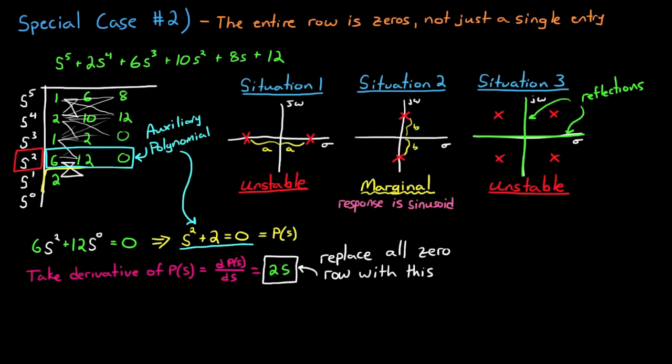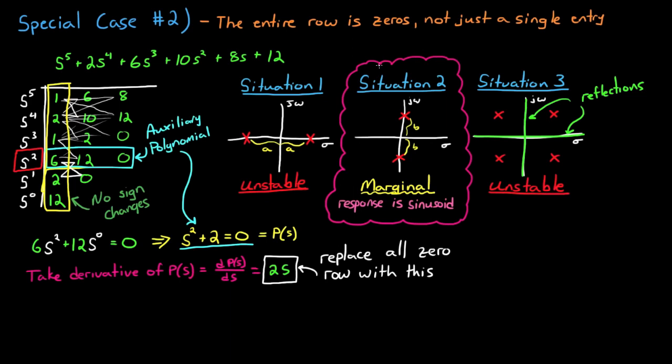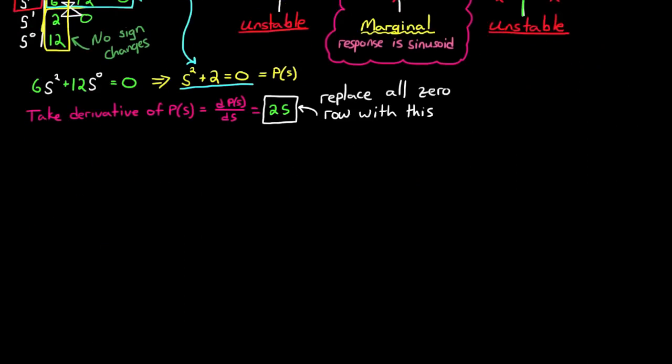Now you can complete the table, which is just 2 times 12 minus 6 times 0 divided by 2, which is just 12. And since there are no sign changes in the first column, you can conclude that there are no roots in the right-half plane, and therefore this system must have some number of roots on the j-omega axis, or this second situation.